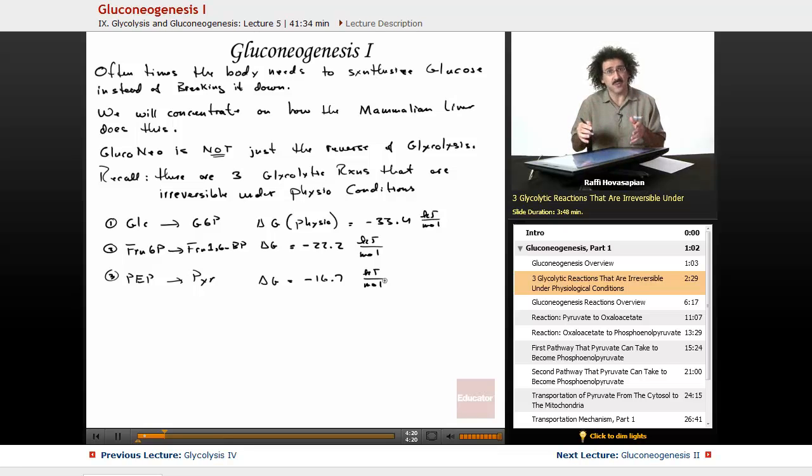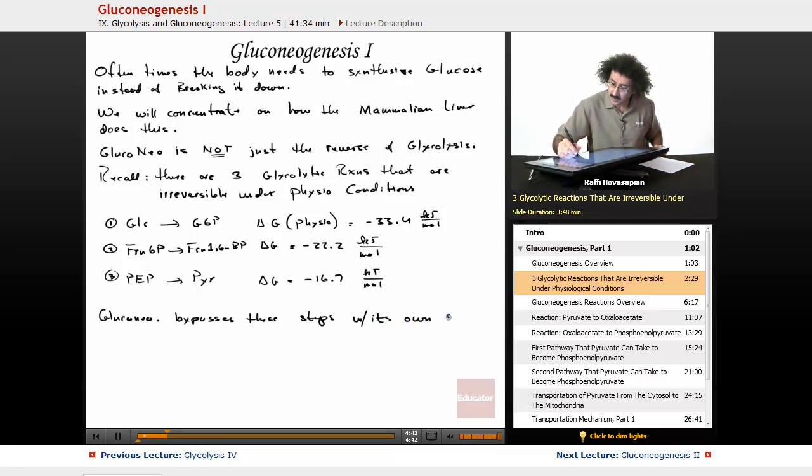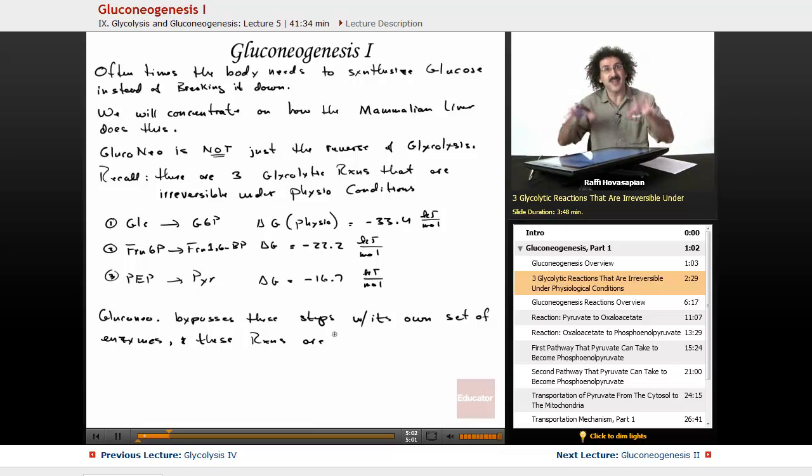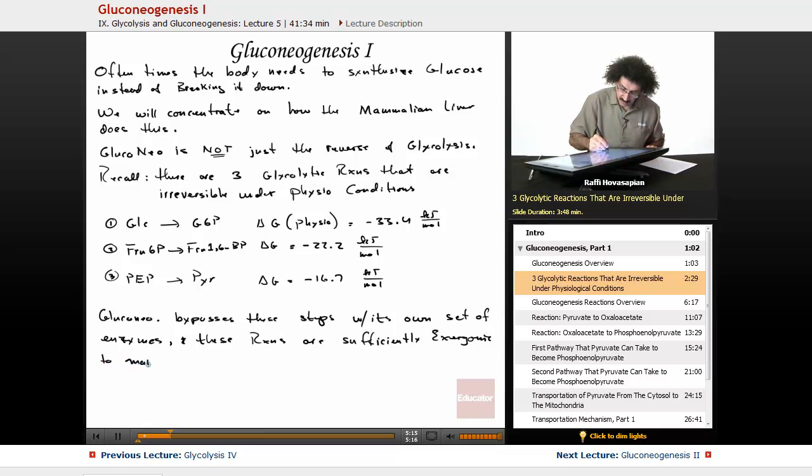So gluconeogenesis has to bypass these reactions. It can't just use these reactions. So gluconeogenesis bypasses these steps with its own set of enzymes, and these reactions are themselves sufficiently exergonic to make sure that gluconeogenesis is irreversible.